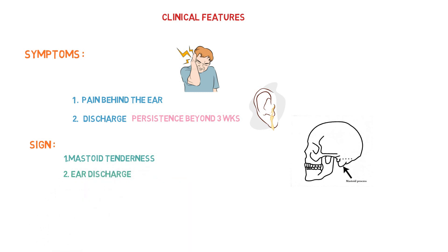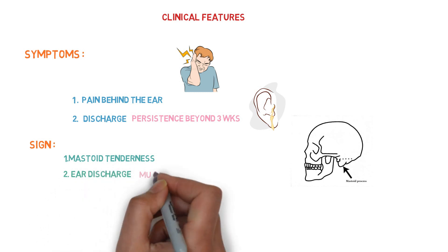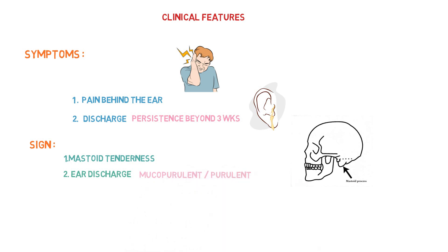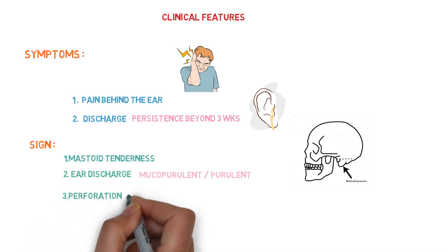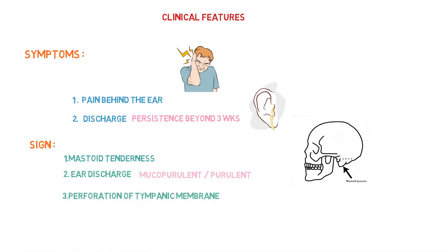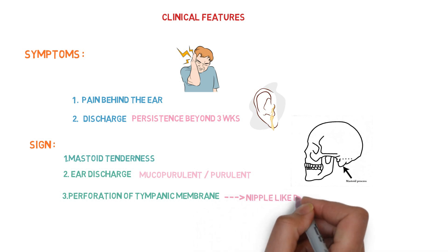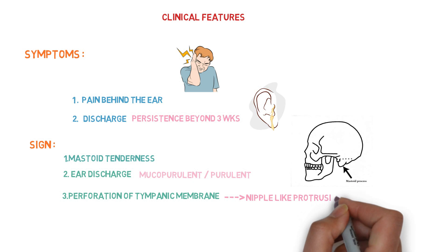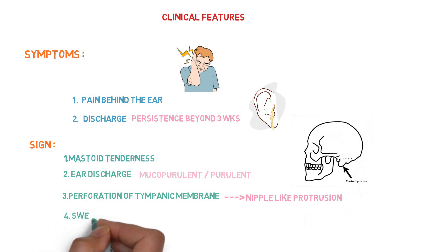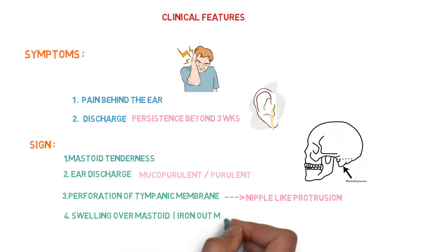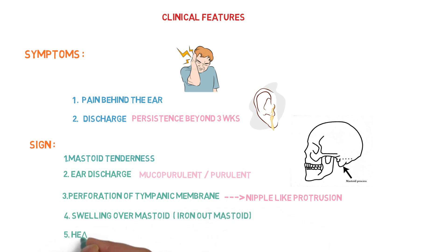Other signs include ear discharge, which may be mucopurulent or purulent, and a lighthouse effect can be seen. Perforation of the tympanic membrane may appear as a nipple-like protrusion, though the tympanic membrane is usually intact but dull and opaque. There is swelling over the mastoid — initially edema of the periosteum, but after some time a smooth, ironed-out feel over the mastoid. A conductive type of hearing loss is always present.